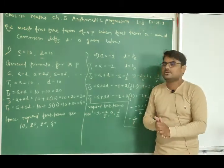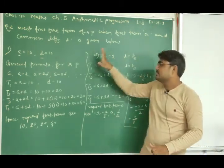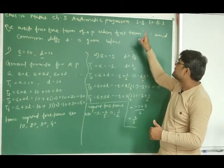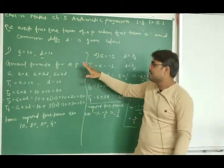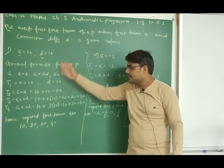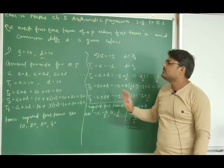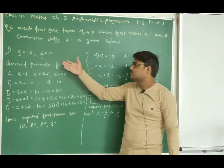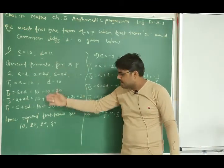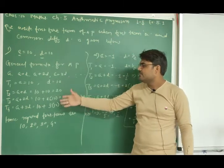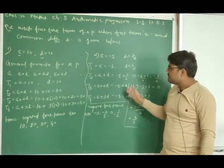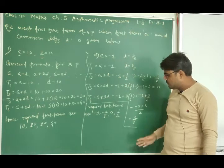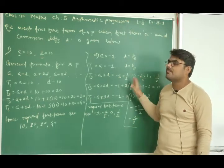So these are the very basic sums of this chapter. In exercise 5.1, this was question number 2. Whenever we are given the first term and the common difference, we can easily find however many terms are asked for. Here we were asked to find four terms, and by the same method we found them.